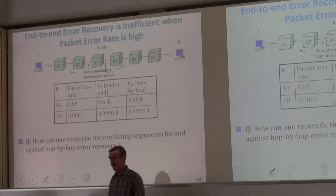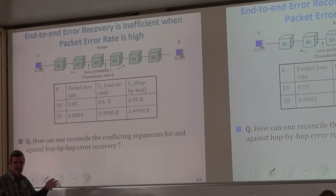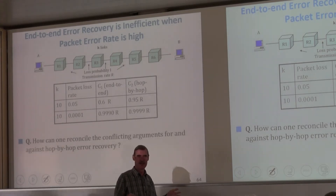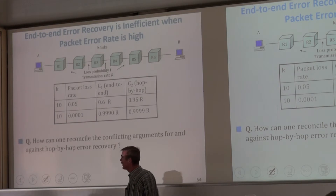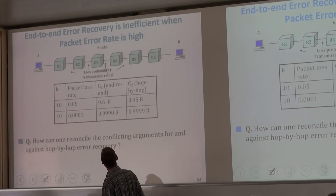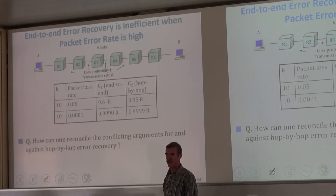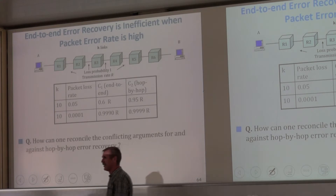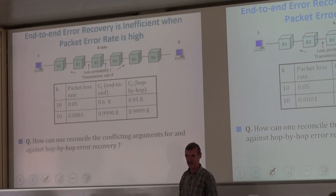When we do end-to-end, if we lose a packet with probability 10% on every link and go through 10 links, the probability of packet loss becomes very large, and the capacity of the concatenation can become very small. With K equals 10 and packet loss of 5%, end-to-end recovery gives only 60% of link capacity — meaning 40% of packets are lost end-to-end. Whereas with hop-by-hop, you retain 95% of capacity — losing only 5%.